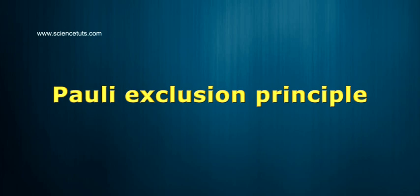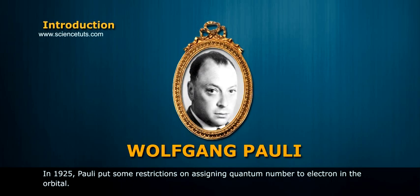Pauli's Exclusion Principle. In 1925, Pauli put some restrictions on assigning quantum numbers to electrons in the orbital.